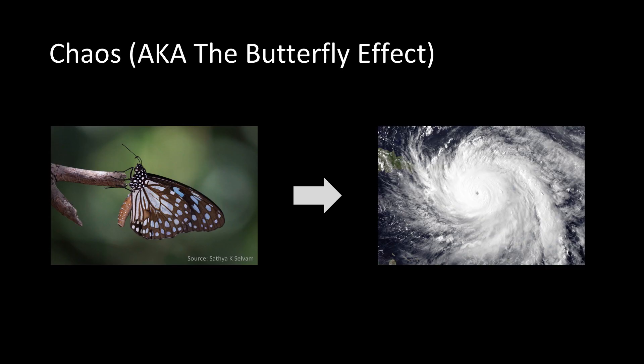It works in the reverse, too — a butterfly could stop a hurricane from forming as well. Another really exciting part about chaos is that it crops up all over our lives, from the stock market to wildlife populations to the motion of amusement park rides. I'm a bit of a visual learner, so let's take a look at an example of chaos and the butterfly effect in action.